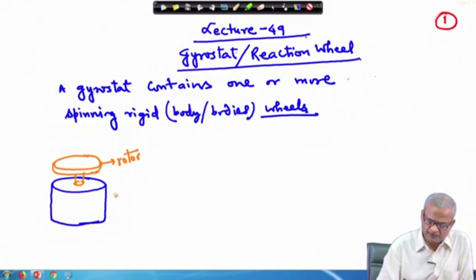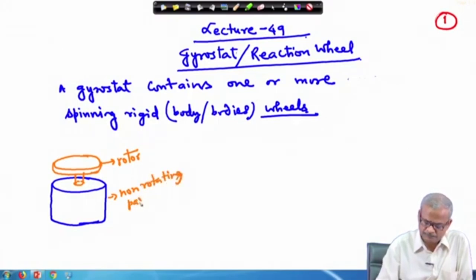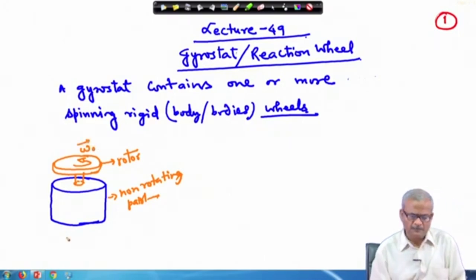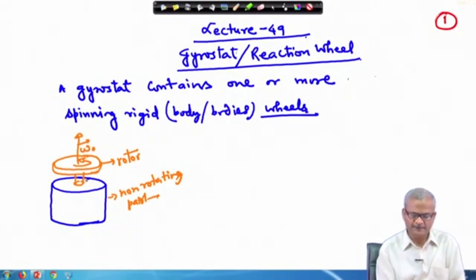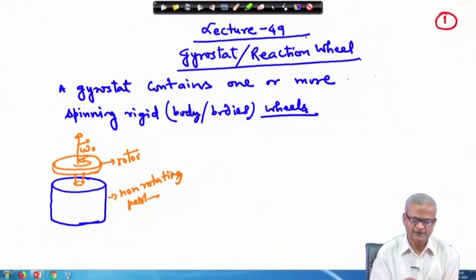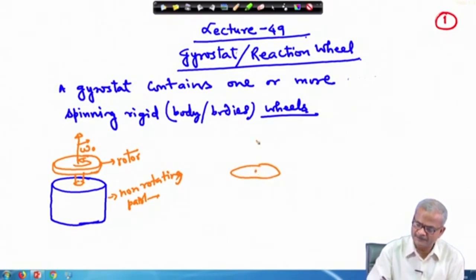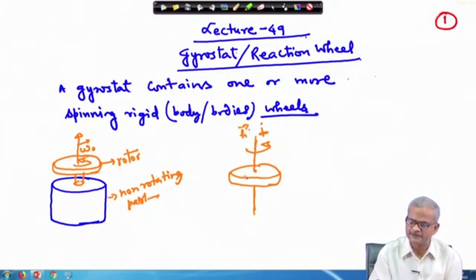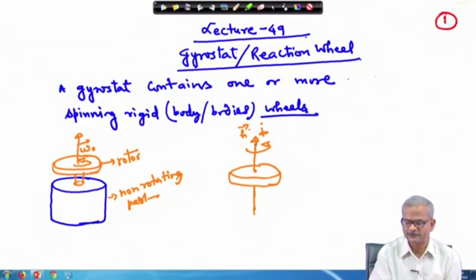This is the rotor — this is the rotating part and this is the non-rotating part. About this axis, the upper part is rotating. We already know from the previous lecture that if we have a rotating wheel spinning about its axis, it tries to maintain its direction. There is an angular momentum vector h associated with this. If you try to perturb it, it resists the motion — you need an external torque to change this orientation.